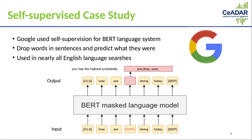One recent example of self-supervised learning being applied in industry to great benefit was recently performed at Google. Google used self-supervision to train what they call the BERT language system, which is used in many different areas of Google's operations such as their search. This system was trained by taking unlabeled text data — just sentences — and dropping a random word within a sentence.